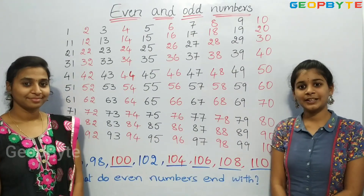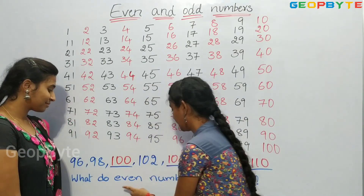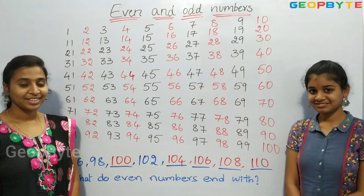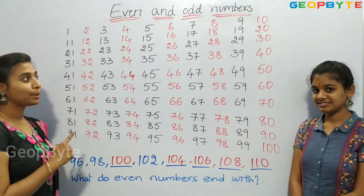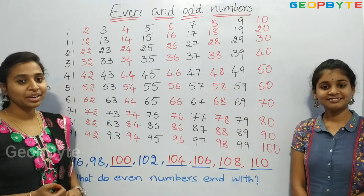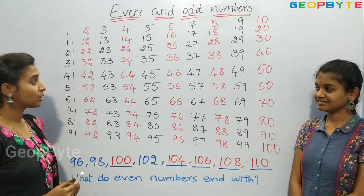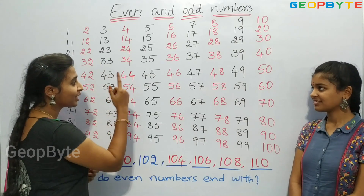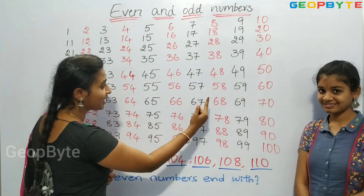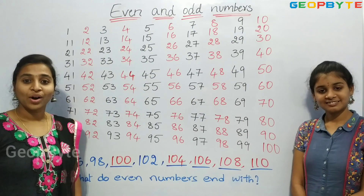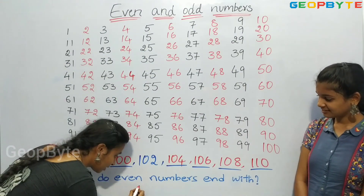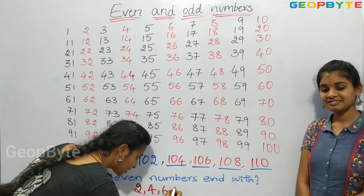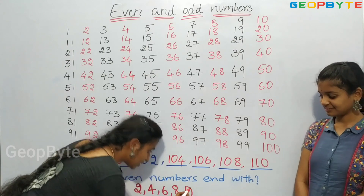Next question: what do even numbers end with? Let us see. Children, as you know, the numbers written in red color are even numbers. If you observe, each and every number is ending with 2, 4, 6, 8, or 0. So all the even numbers end with 2, 4, 6, 8, 0.